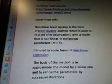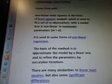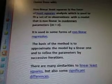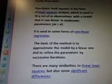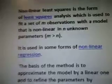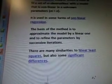So the quote from Wiki is, non-linear least squares is the form of least squares analysis which is used to fit a set of M observations with a model that is non-linear in N unknown parameters. It is used in some forms of non-linear regression.